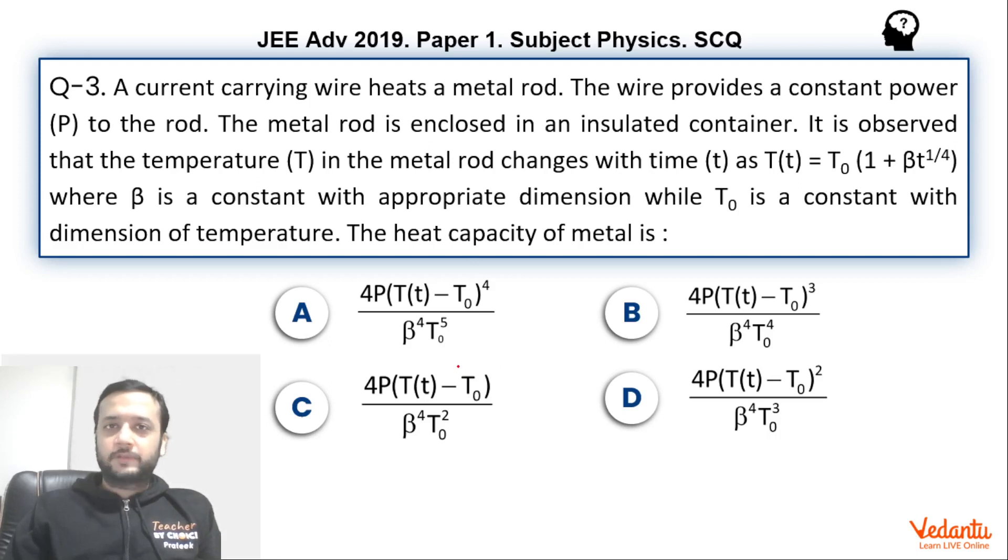I am sure most of the students would have collected a free easy three marks in this question. It is given that there is a metal rod which is heated by a wire and the wire provides the constant power P to the rod. The temperature of the rod as a function of time has been given and we have to find the heat capacity of the rod.